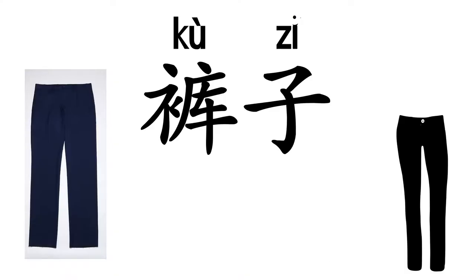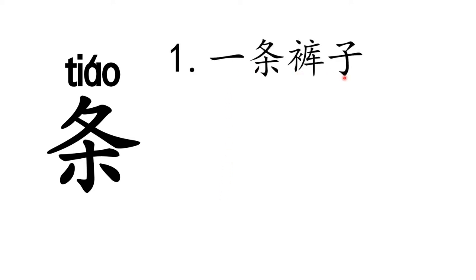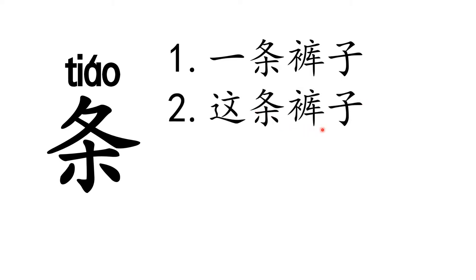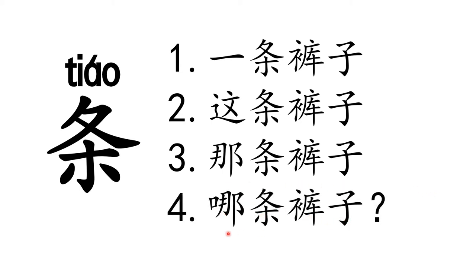Next is 裤子 — trousers. 蓝色的裤子 is blue trousers, 黑色的裤子 is black trousers. The measure word 条 is used for 裤子, same as 裙子. 一条裤子 means 'a pair of trousers', 这条裤子 means 'these trousers', 那条裤子 means 'that pair of trousers', 哪条裤子 means 'which trousers?'